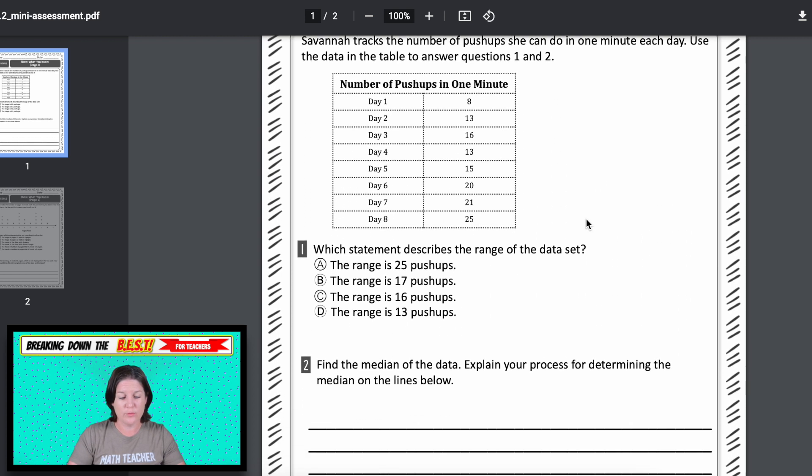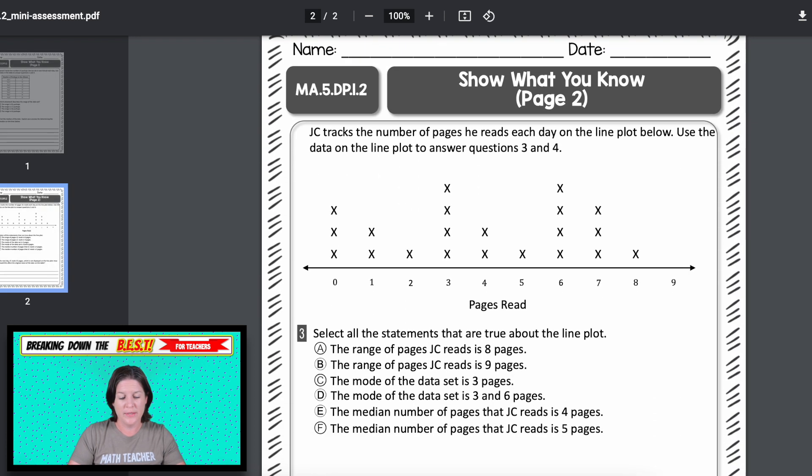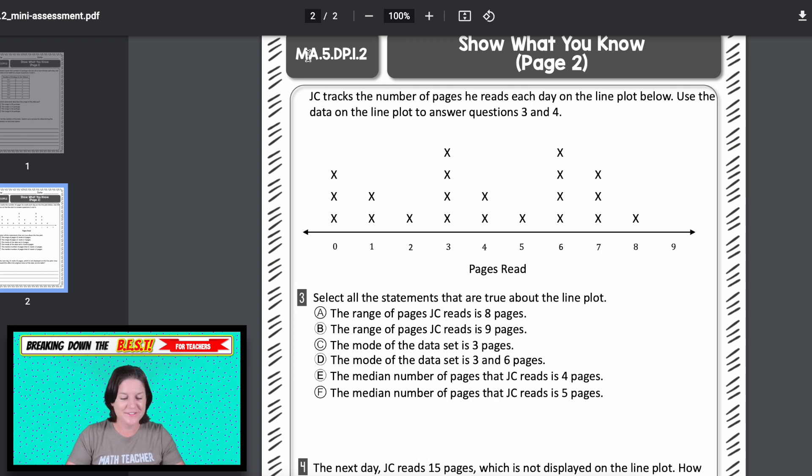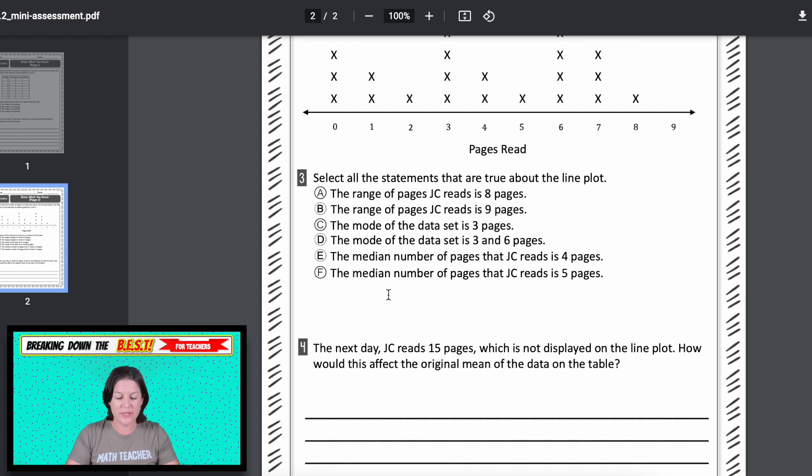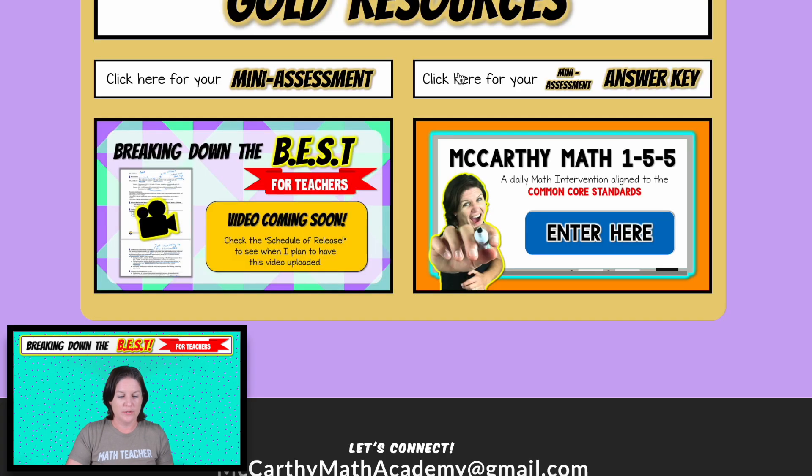You can see there's a variety of question types. We got this one talking about the range, the median here. Here we've got a line plot. JC, I actually was listening to NSYNC while I was creating this test. And anyway, what was I saying? Okay, so this one is talking about the range, the mode and the median. It's a select all. So you got to find which statements are true there. And then here, this one says, well, you can read it. But this one is saying how would if we if we add if we add a new data point, how would it affect the mean there? So mini assessment there, you got your answer key right there.